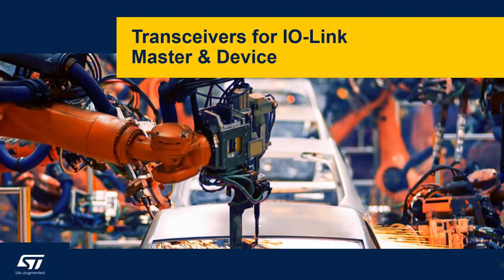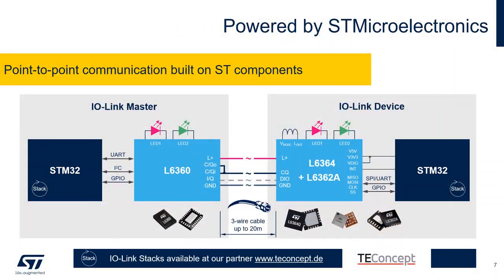We are coming now to the ST product offer. IO-Link is a point-to-point communication bus with one master on one side and one device on the other side. ST provides integrated solutions for both applications. We have the L6360, which is one of the first IO-Link master transceivers released on the market since the technology introduction. For the device side we can propose a single channel transceiver L6362A featuring a very efficient power stage for the lowest power dissipation and extreme robustness. I would like to take the opportunity to introduce also our brand new device transceiver L6364. I will show you more details about it later.